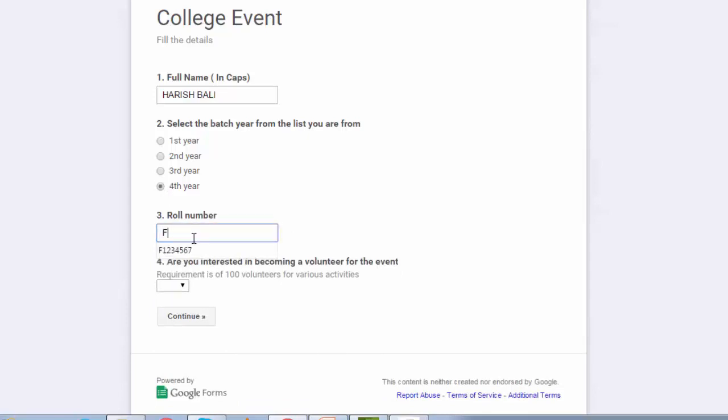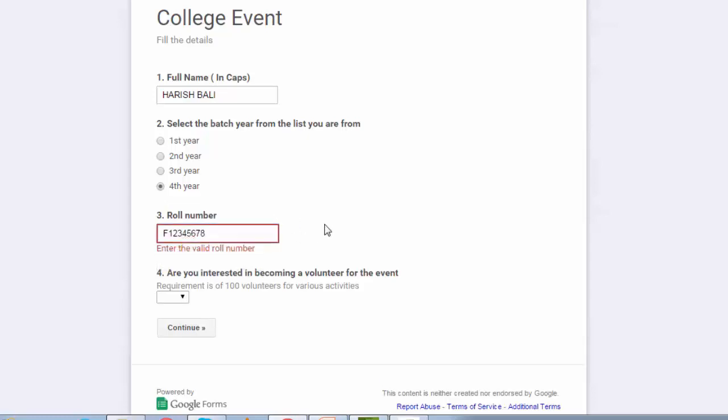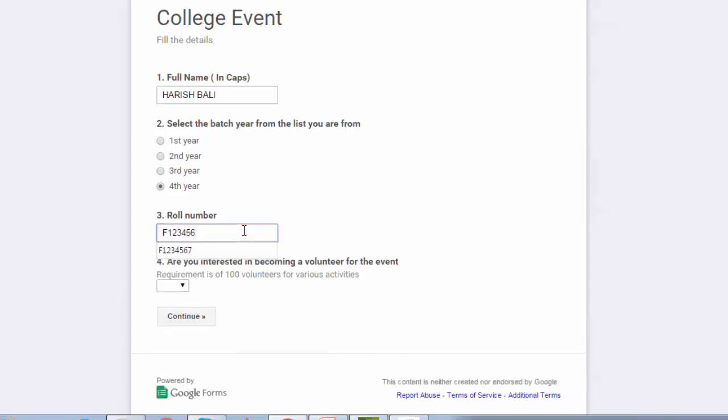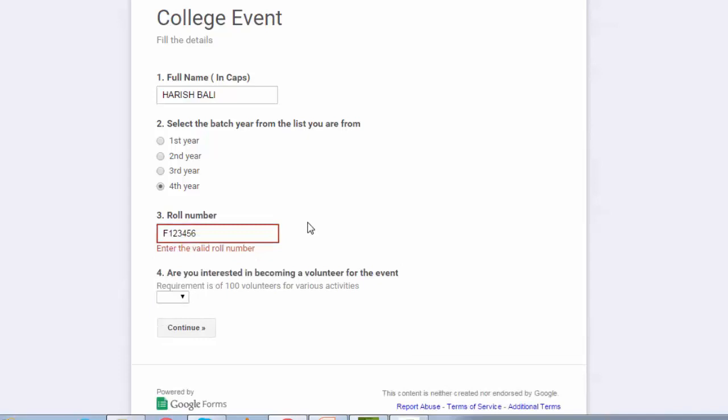If I enter F 1, 2, 3, 4, 5, 6, 7 it accepts. Moment I try entering the 8th digit it shows invalid. If I go back and again make it 6 digits it shows invalid. Let me now go back to the form and show you the expression that I have used.